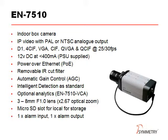The EN 7510 is an IP camera with an analog video output and a range of resolutions suitable for most applications. A power supply is provided in the price, but this camera is also compatible with Power over Ethernet, which can simplify installation. Day-night operation and automatic gain control make it more flexible in environments where there are varying light levels. Intelligent detection is provided as standard, and analytics is available on the VCA version.